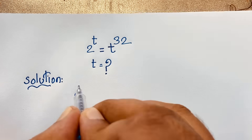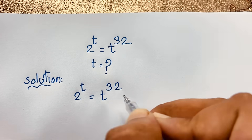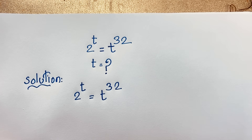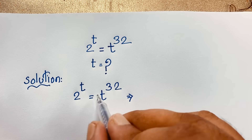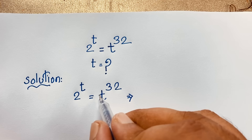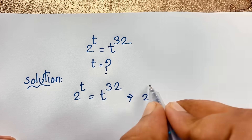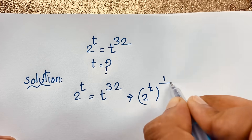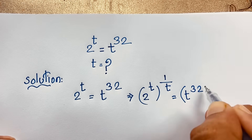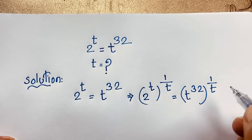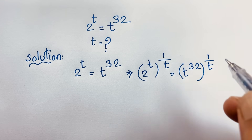Here, 2 to the power t is equal to t to the power 32. I take our equation and apply both sides to the exponent 1 over t. You can also use logarithms on both sides, but to find the real solution I use the exponent approach. So: 2 to the power t, raised to the power 1 over t, is equal to t to the power 32, raised to the power 1 over t.